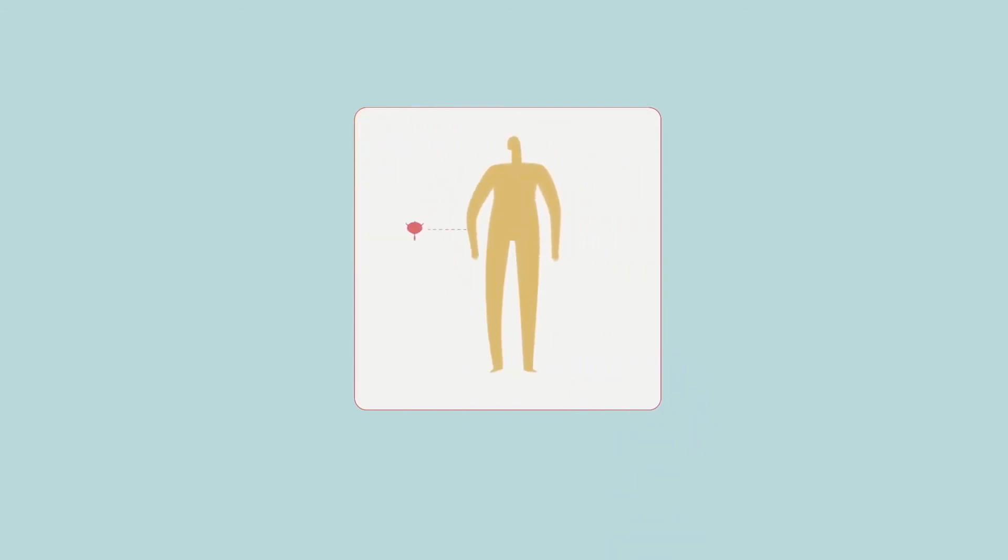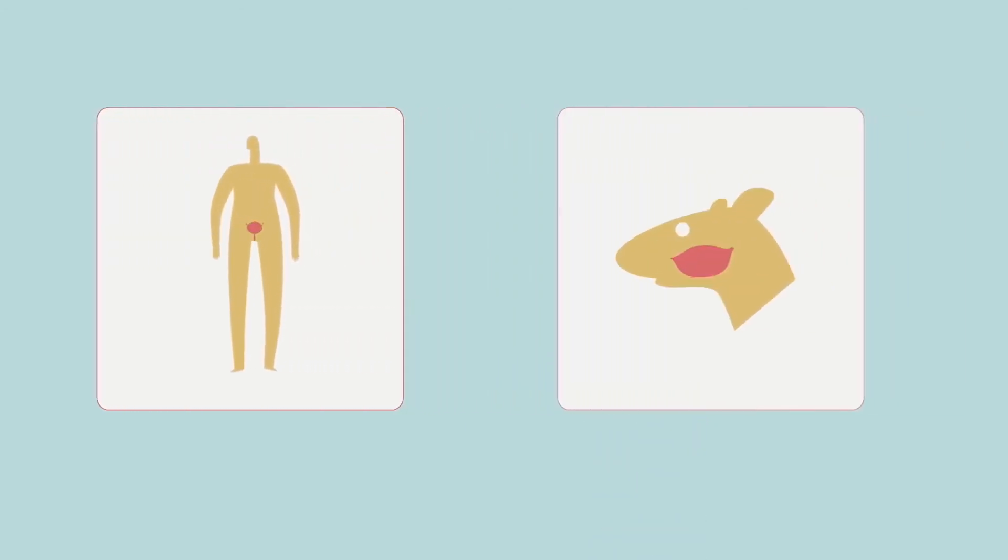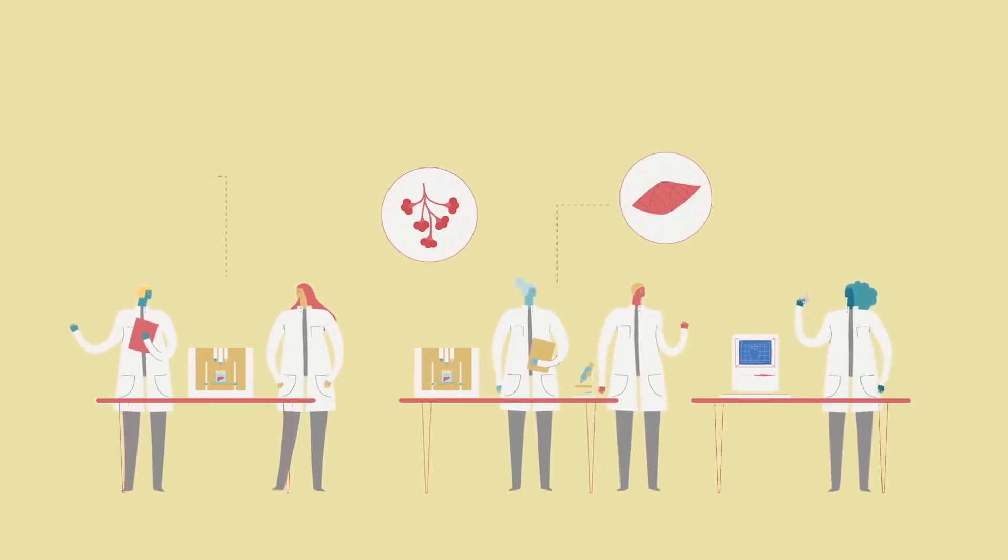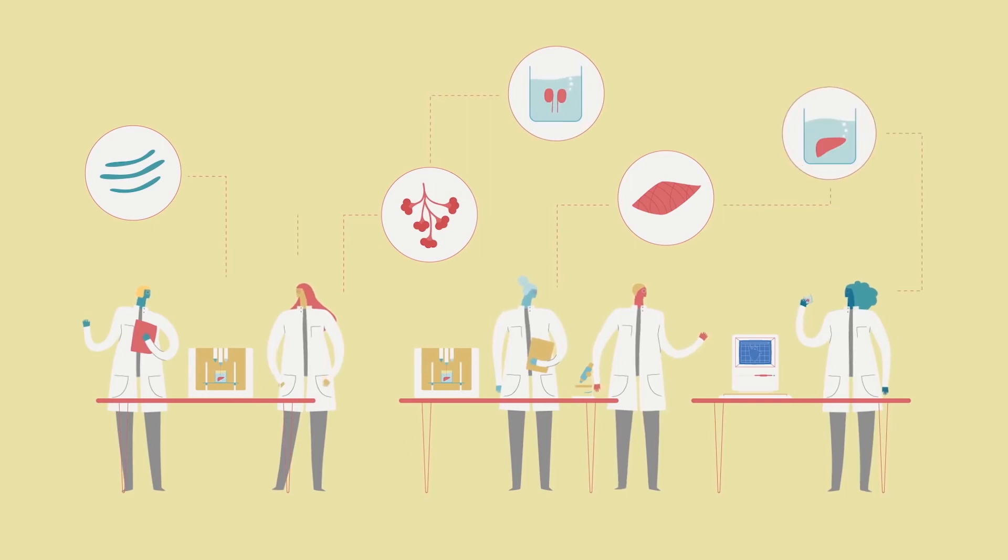We can already print relatively simple structures like this meniscus. Bioprinted bladders have also been successfully implanted, and printed tissue has promoted facial nerve regeneration in rats. Researchers have created lung tissue, skin, and cartilage, as well as miniature semi-functional versions of kidneys, livers, and hearts.